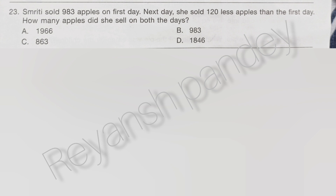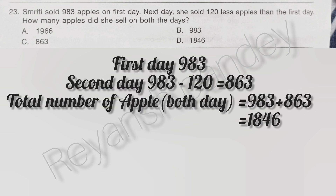Smriti sold 983 apples on the first day. The next day she sold 120 fewer apples than the first day. How many apples did she sell on both days? The answer is D — 1846.